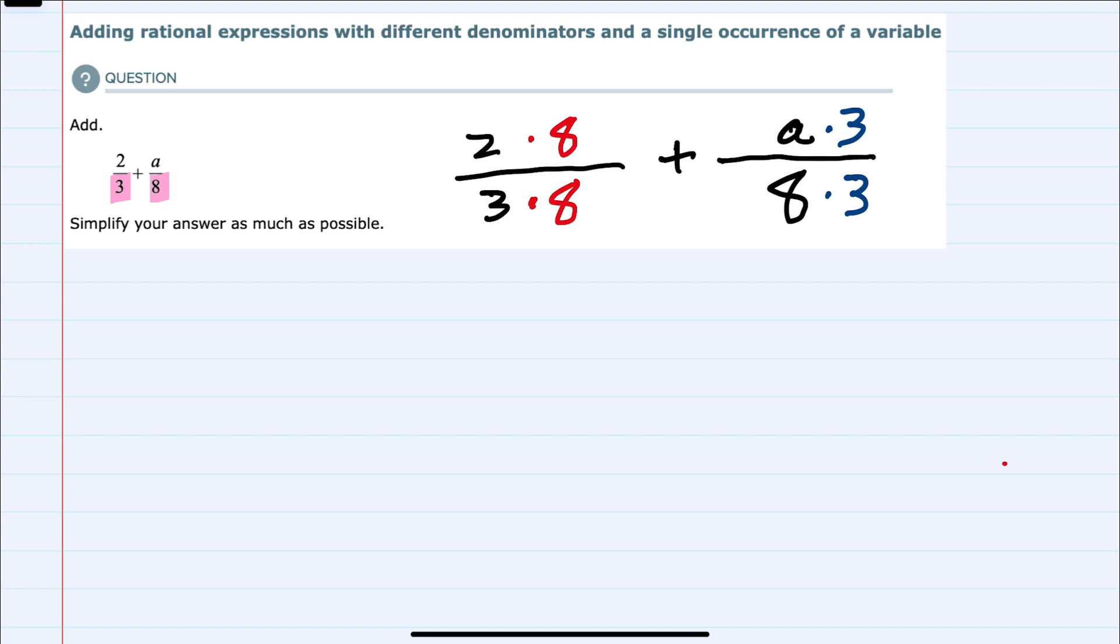So we can now simplify each side. On the left I now have a 24 in the denominator and in the numerator I have 2 times 8 or 16.